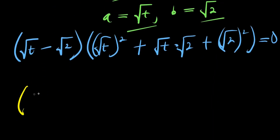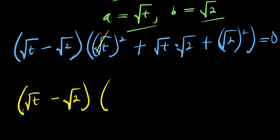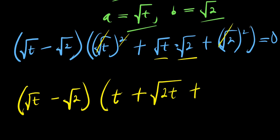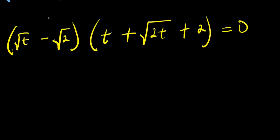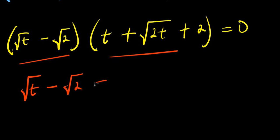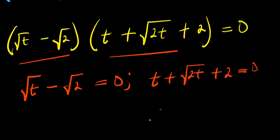From here, square root of t squared cancels to t, root t times root two gives square root of two t, and square root of two squared cancels to two. So we have square root of t minus square root of two, times t plus square root of two t plus two, equals zero. We equate each factor to zero: the first is square root of t minus square root of two equals zero, and the second is t plus square root of two t plus two equals zero.